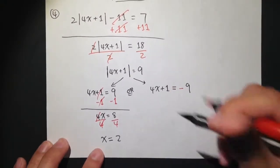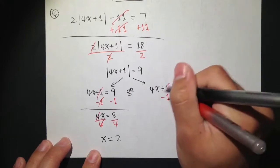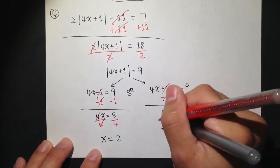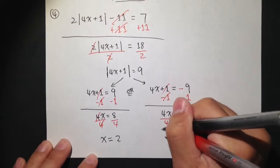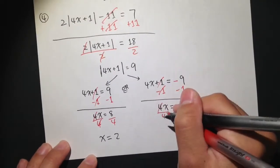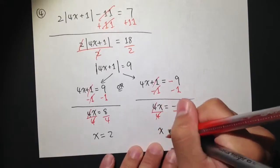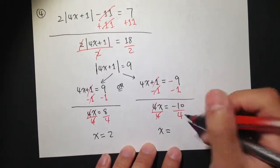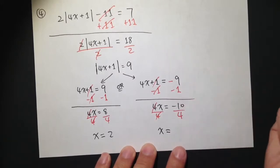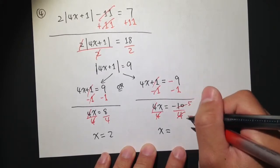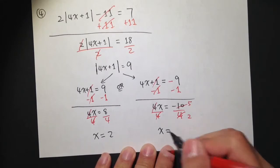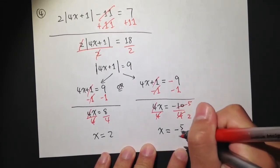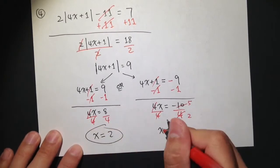Moving to the second case: subtract 1 on both sides, cancel the ones, and I get 4x equal to negative 9 minus 1, which is negative 10. Then divide both sides by 4; the 4 cancels. We have negative 10 over 4, and we can reduce this fraction by 2: 10 divided by 2 is 5, and 4 divided by 2 is 2. So x is equal to negative 5 over 2. Two answers.